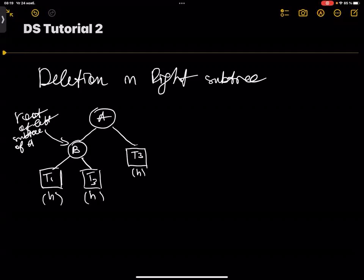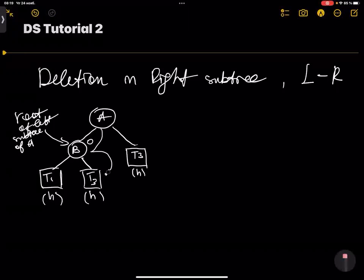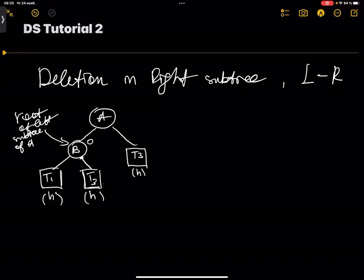Let's calculate the balancing factor. The balancing factor formula is: height of left subtree minus height of right subtree. For B, left subtree height is h and right subtree height is h, so B's balancing factor is 0. For A, the left height is h+1 (one step to B, then h steps to the leaf), and the right subtree height is h, so A's balancing factor is h+1 minus h, which equals 1.